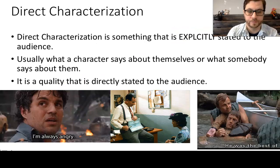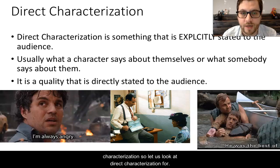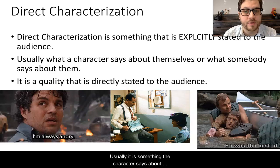We have two main types of characterization: direct characterization and indirect characterization. Direct characterization is something that is explicitly stated to the audience. Usually it is something the character says about themselves, or what somebody says about them — a quality that is told to you, the audience member, about their characterization.